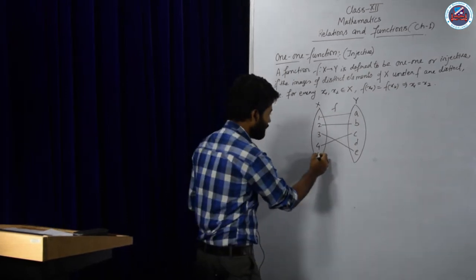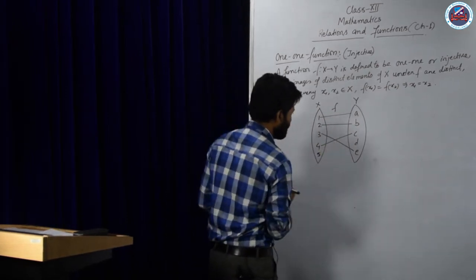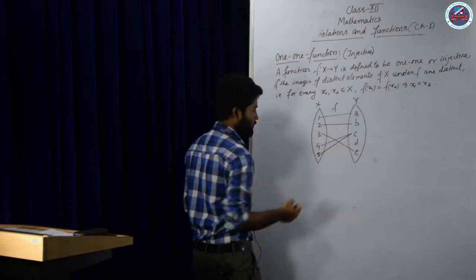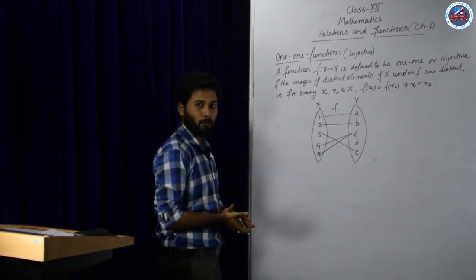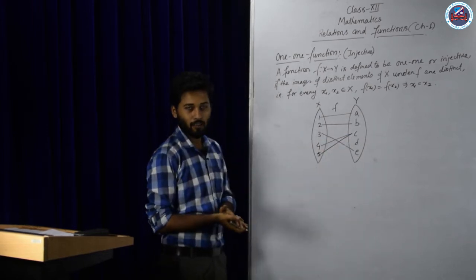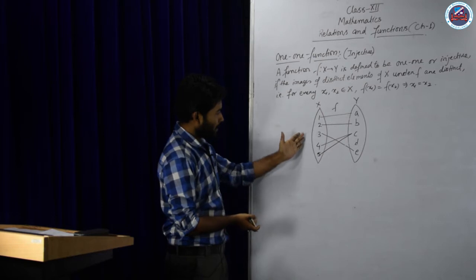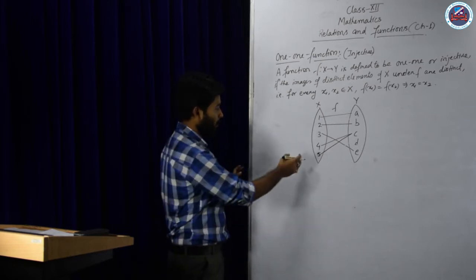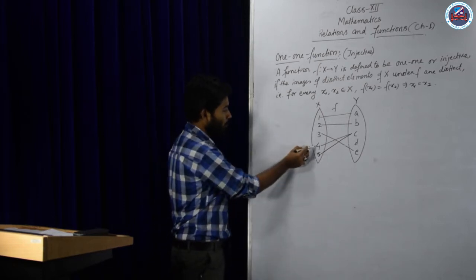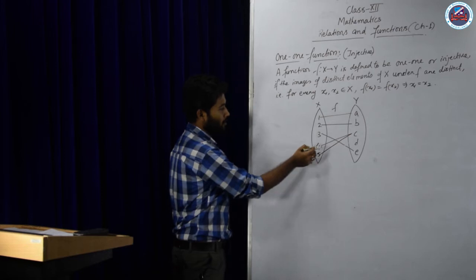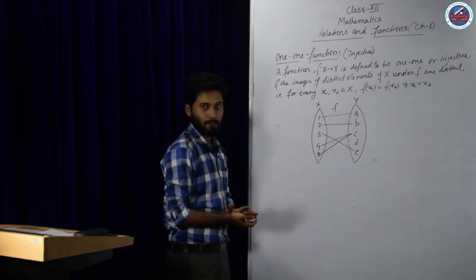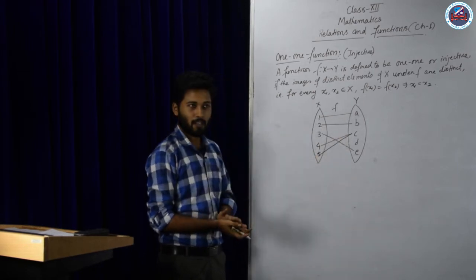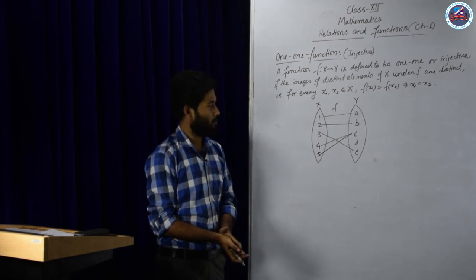What if I write a 5 here and connect 5 with C — will it be a one-to-one function? No. Such kinds of functions are called many-to-one functions, where more than one element is connected to a single element. So if it is not a one-to-one function, it will be a many-to-one function.